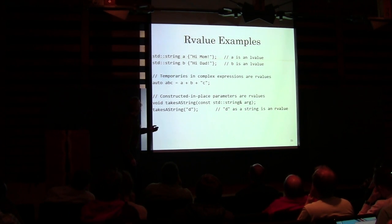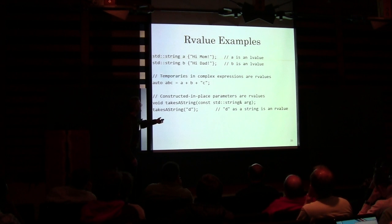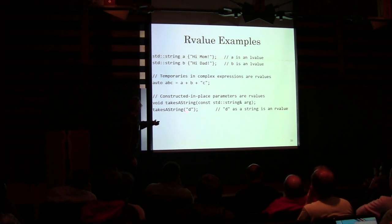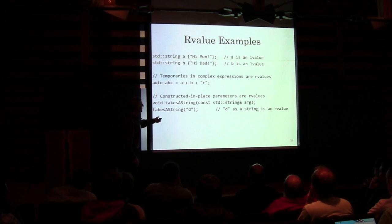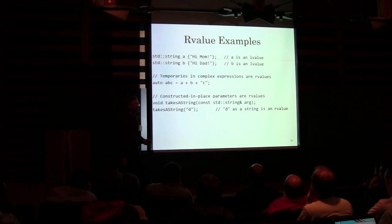If you construct something in place — here I've got a function that takes a string and I pass it a char star — inside that, there's a string being built. I don't see that. That's a temporary being built.